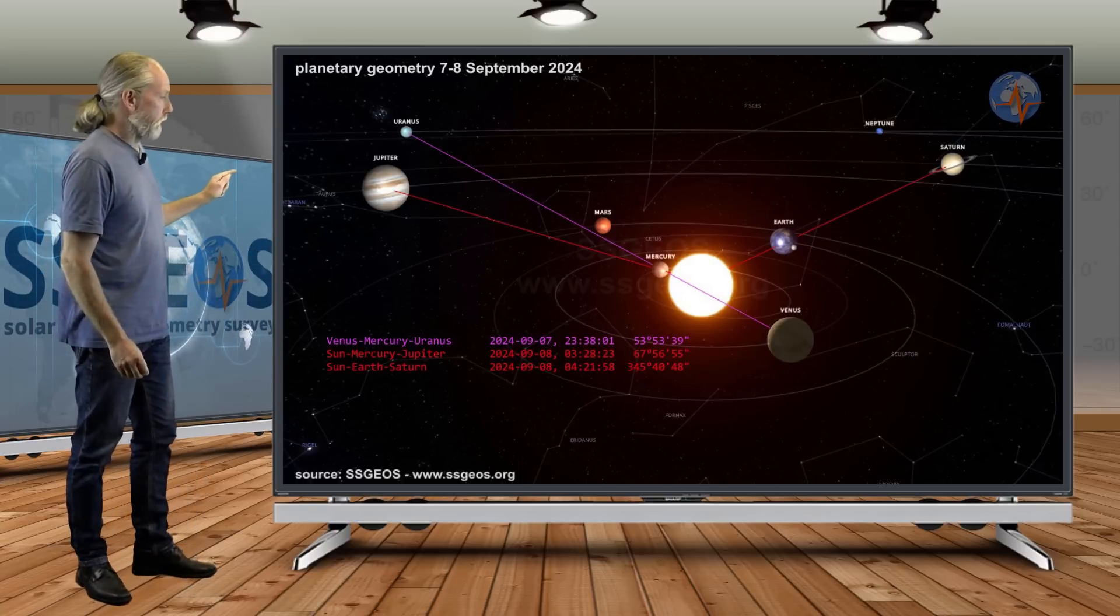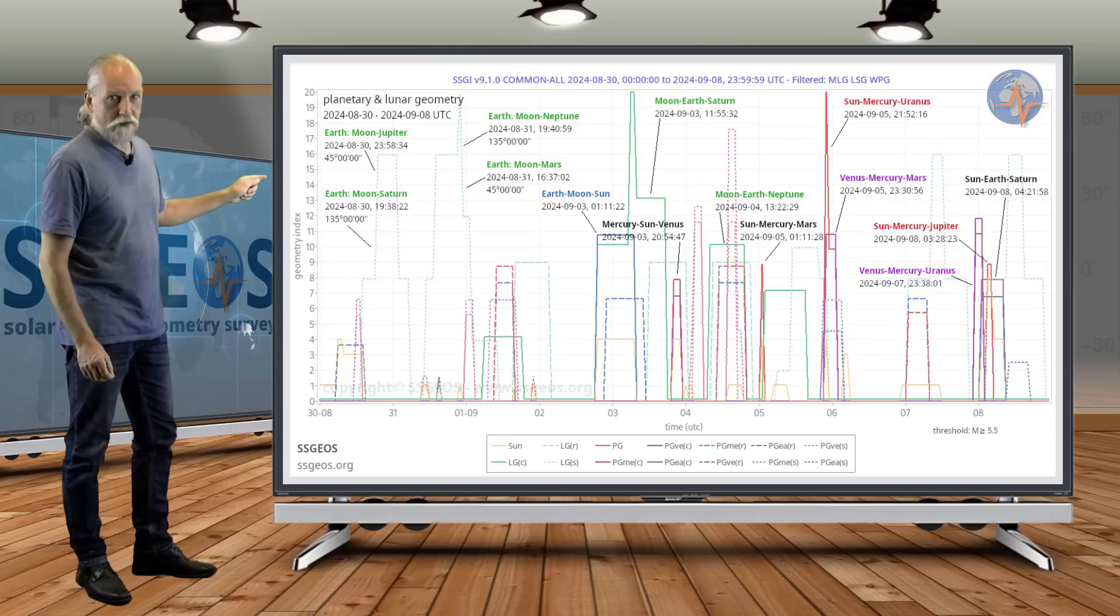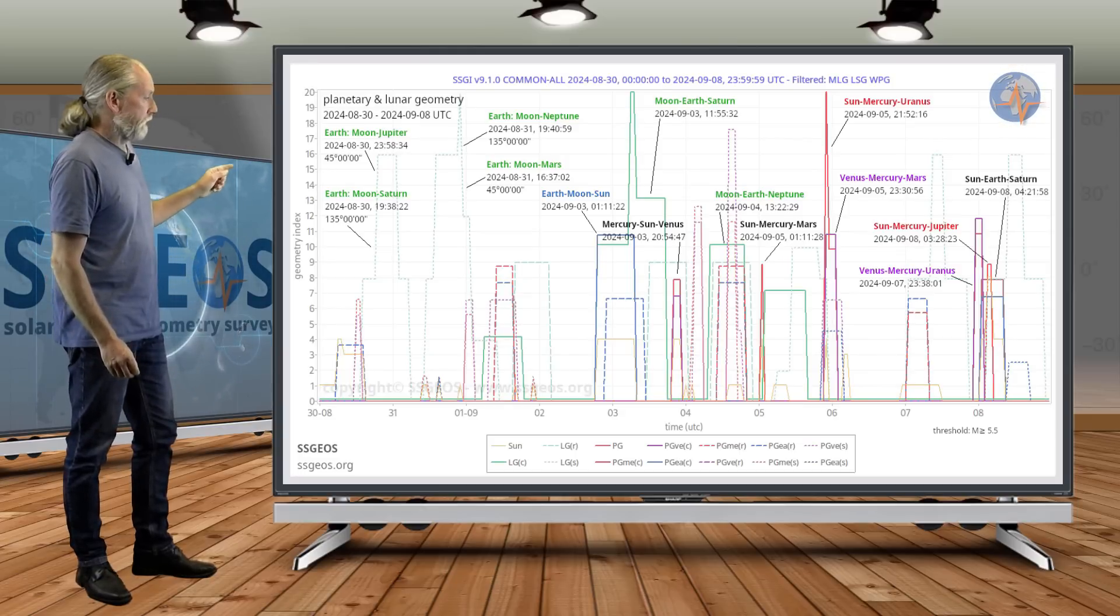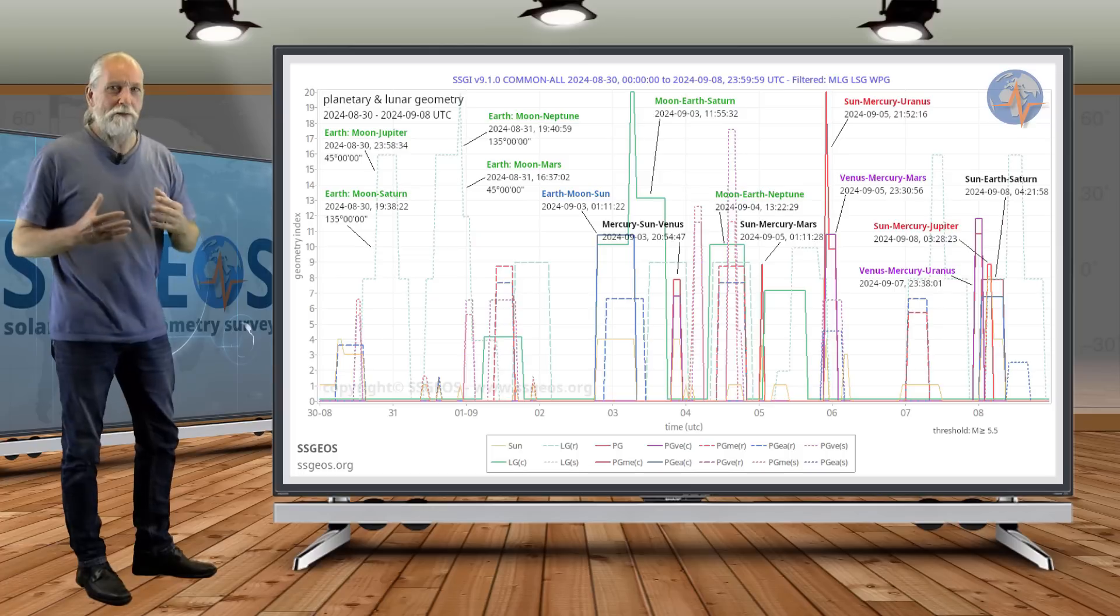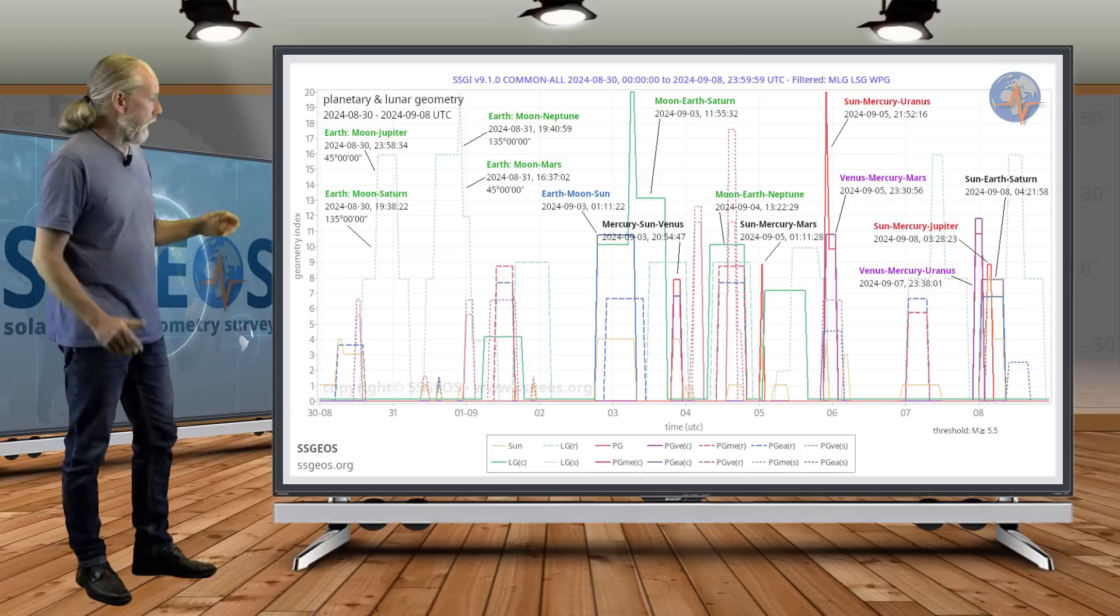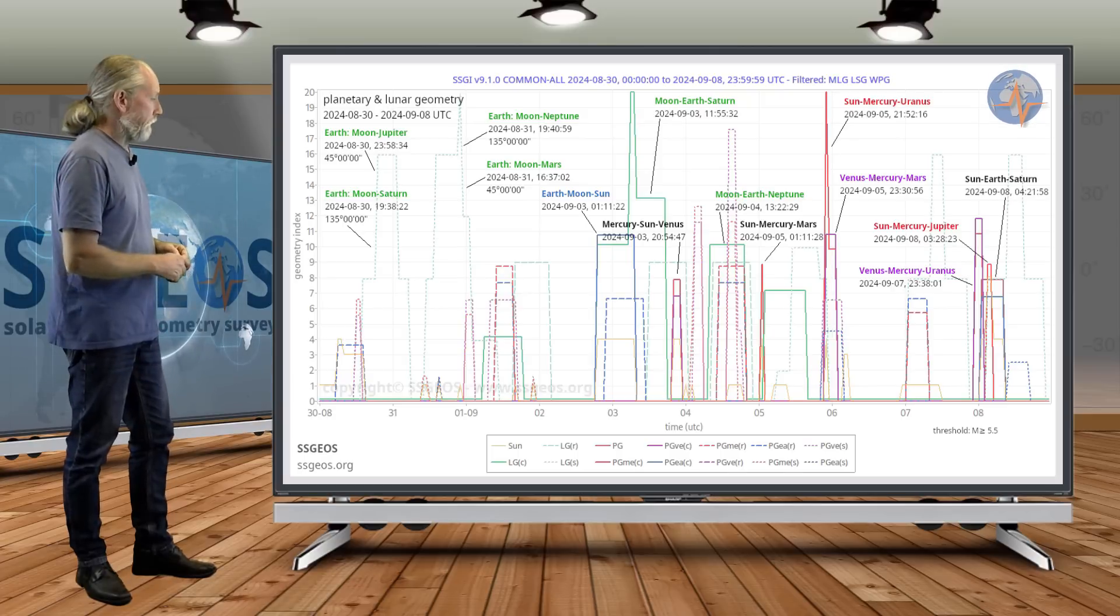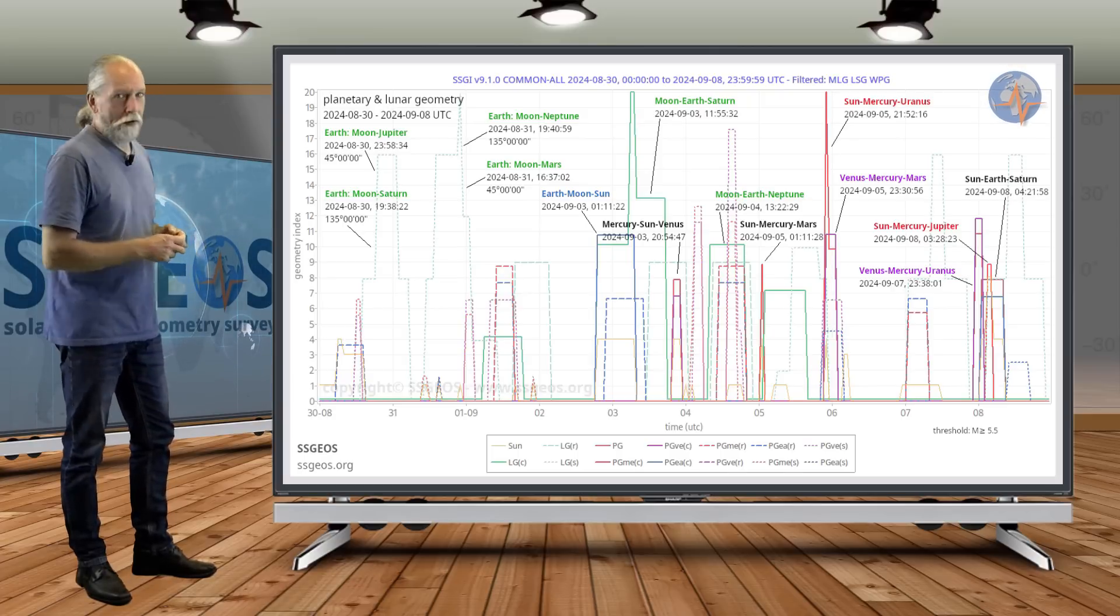But we see that the lunar geometry will be on the 7th and 8th as well. So I suspect that following that lunar geometry, which is similar—not the same, but similar—to what we have on the 30th and 31st, there could be a seismic response there around the 9th or 10th.